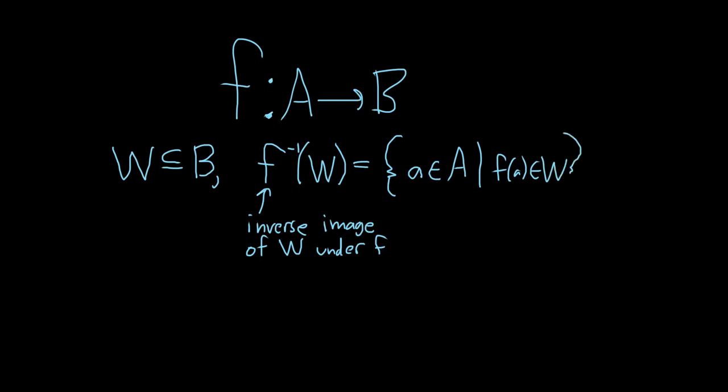Said another way, it's the set of all elements in A that gets sent to W. Let me draw a picture so you see what is going on. So here is A, and here is B. And then W is going to be this purple set over here.